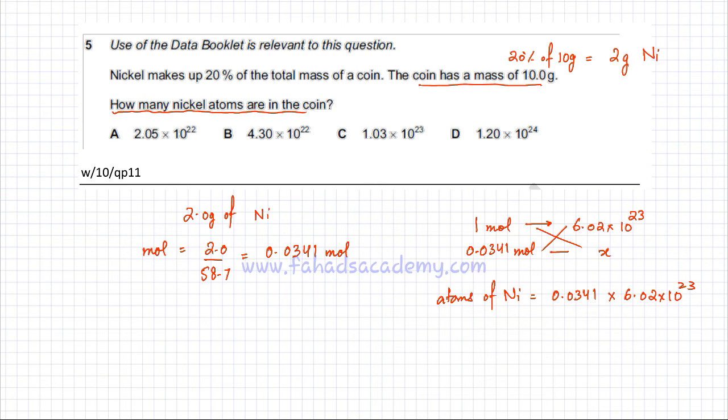And this comes out to be equal to 2.05 into 10 raised to the power of 22. So that's according to three significant figures, which is why option A is going to be the correct option for this question.